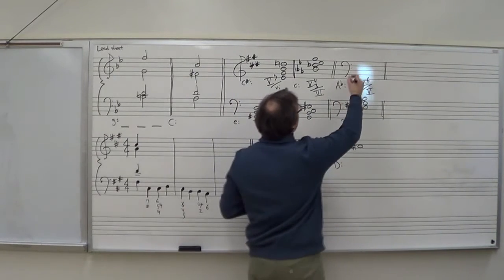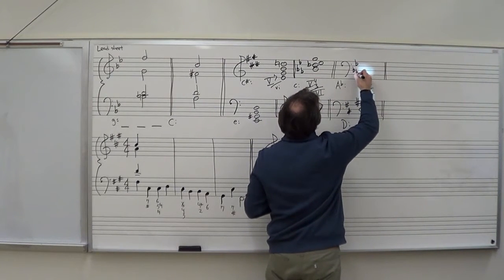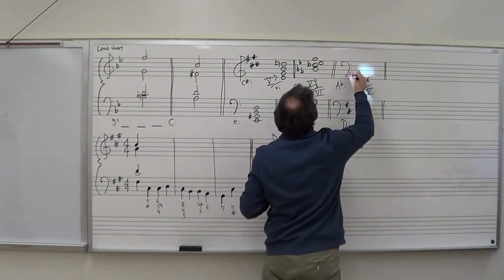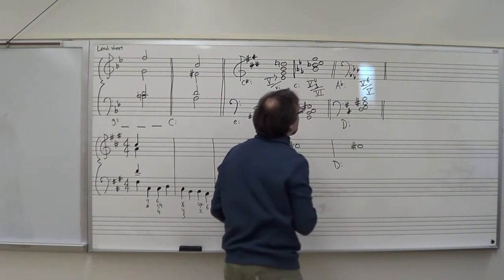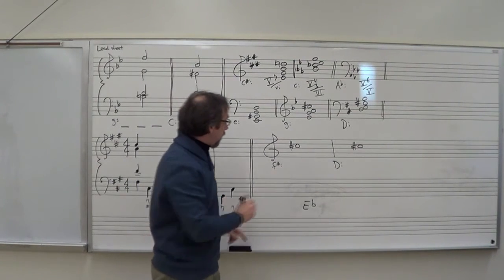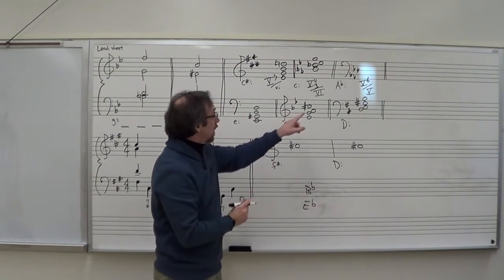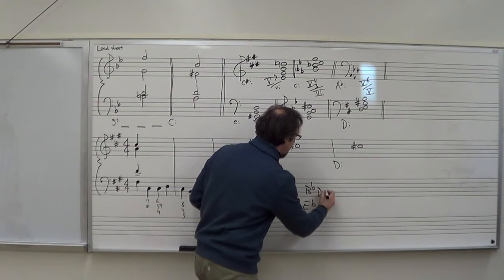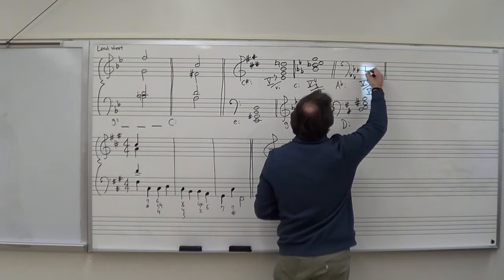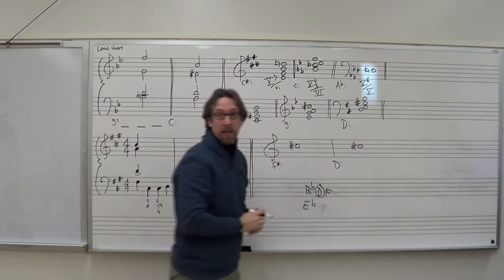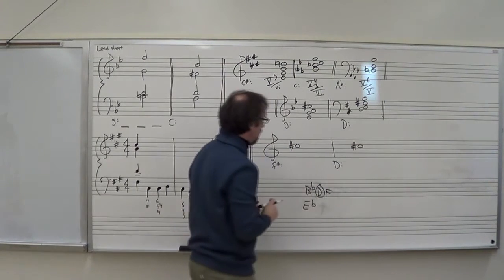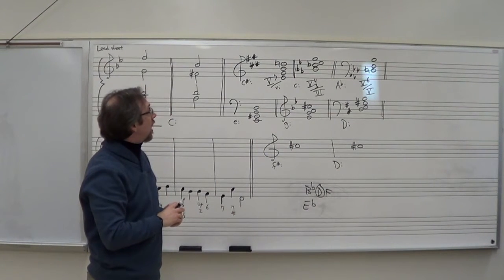If we go to A-flat major, my key signature is 4 flats: B-flat, E-flat, A-flat, D-flat. 5-6 of 5: 5 is E-flat, up a 5th is B-flat. It's just a triad in first inversion: B-flat, D, F. When it says 6, that means first inversion, so D is my lowest note. I need to put the natural in to negate the flat in the key signature, then put my F and my B-flat. And I have my 5-6 of 5.